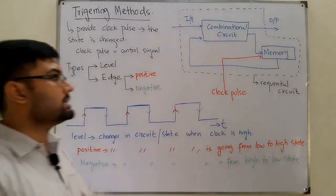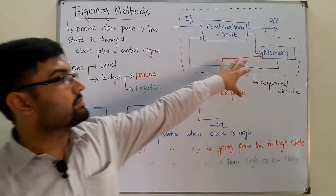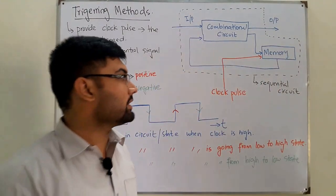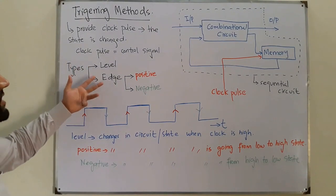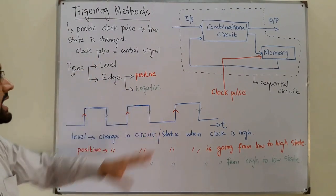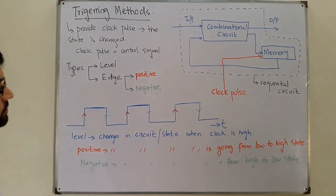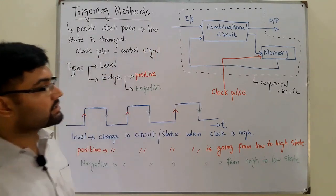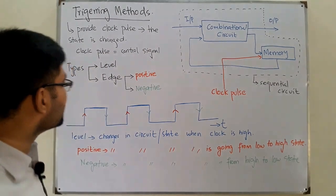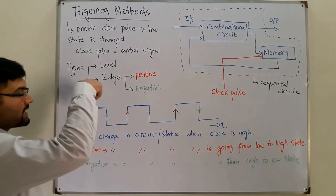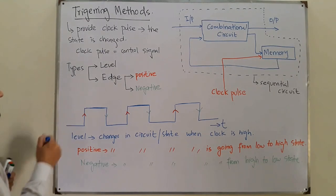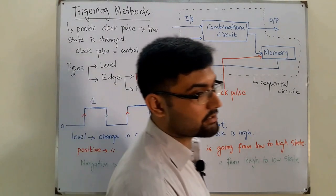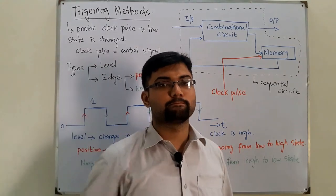Triggering is the changing of the state when a clock pulse and the present input are provided — the thing stored in the memory gets changed, and that is called triggering. We have three ways to do it: level triggering when the clock is high; positive edge triggering when the clock transitions from low to high; and negative edge triggering when it comes from high to low. That's all for today — see you in the next lecture very soon, insha'Allah. Take care, goodbye.